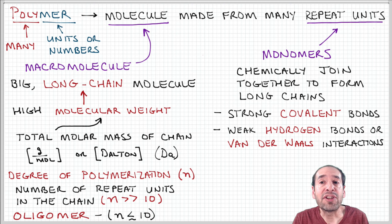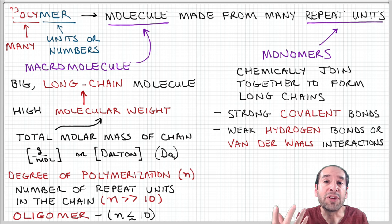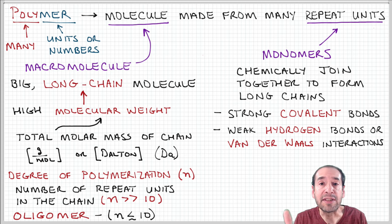But secondary interactions between the bases of DNA, for example, can fine-tune the structure. So for example, the double helix structure of DNA is a result of hydrogen bonding between different chain strands that are aligned next to each other.